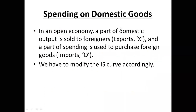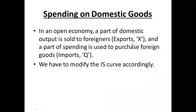Spending on domestic goods. In an open economy, a part of domestic output is sold to foreigners, which are called exports, denoted as X. And a part of spending is used to purchase foreign goods, which are called imports, denoted as Q. We have to modify the IS curve accordingly.